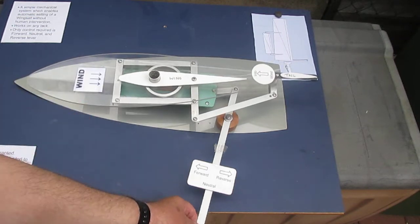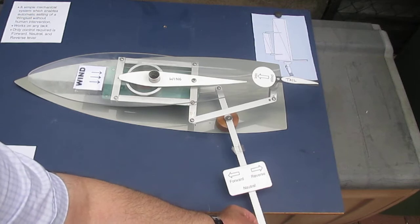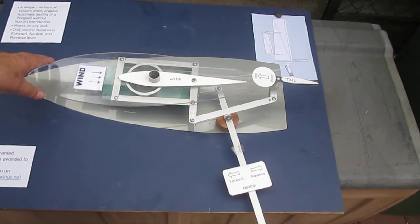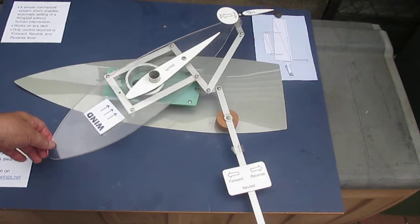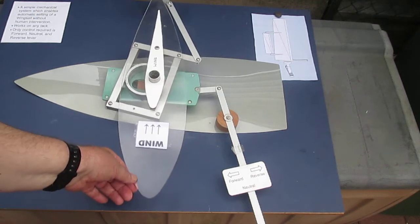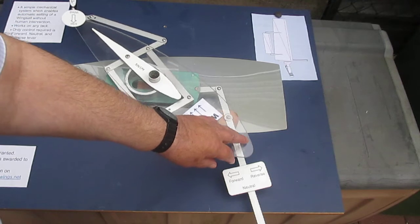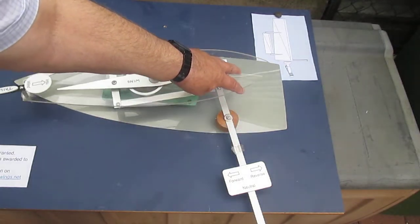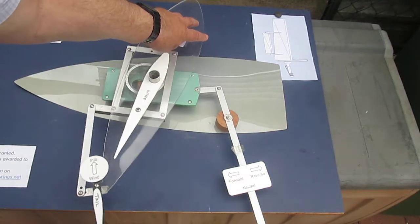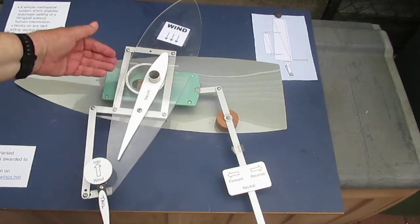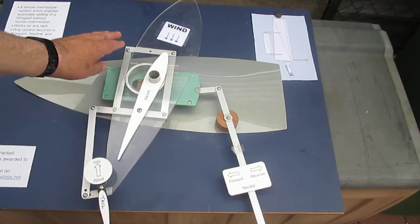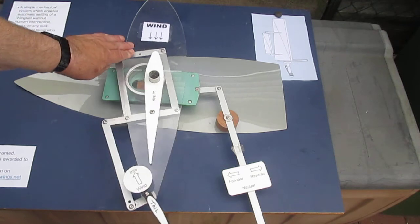But if we want to go in reverse, we move this lever to the reverse position, and we see that as we go around, the tail forces the wing to push in the other direction, in the reverse direction, which will put the boat into reverse.